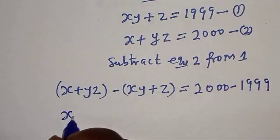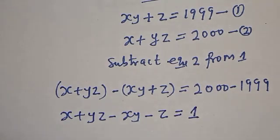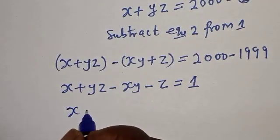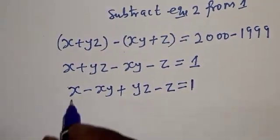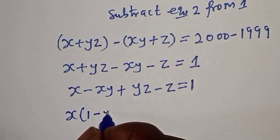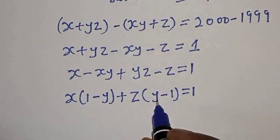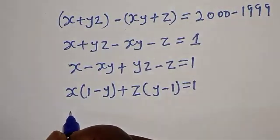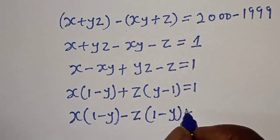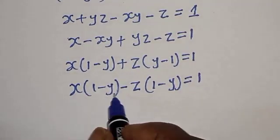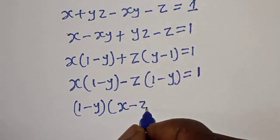Then, this is x plus yz minus xy minus z is equal to 1. We can rearrange this: x minus xy plus yz minus z is equal to 1. Factoring, x bracket 1 minus y, plus z bracket y minus 1 is equal to 1. Since y minus 1 equals negative of 1 minus y, the whole equation becomes x bracket 1 minus y minus z bracket 1 minus y is equal to 1. Therefore, 1 minus y bracket x minus z is equal to 1.